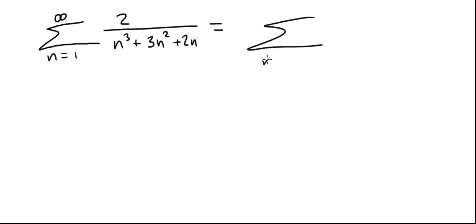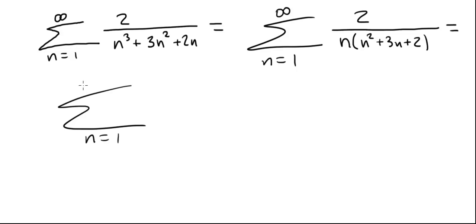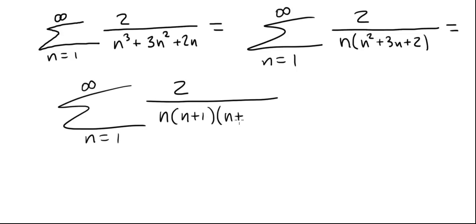First we're going to factor the denominator in each term. This becomes 2 divided by n times n squared plus 3n plus 2, and then we can further factor n squared plus 3n plus 2. So this is the summation from 1 to infinity of 2 divided by n times n plus 1 times n plus 2.